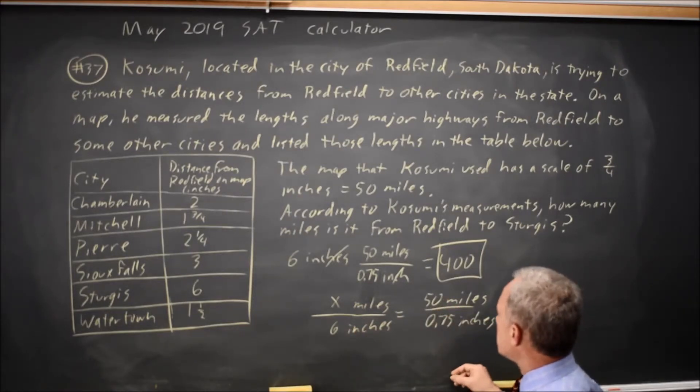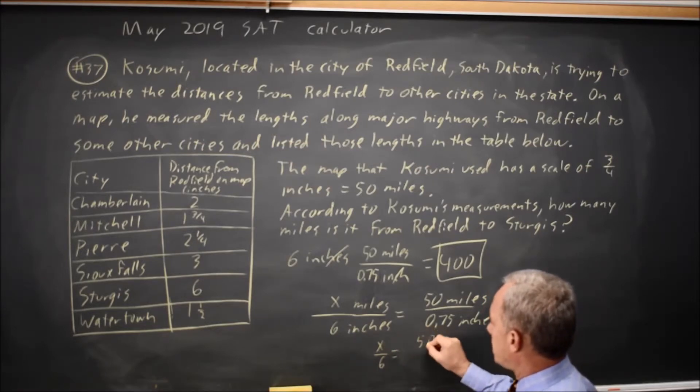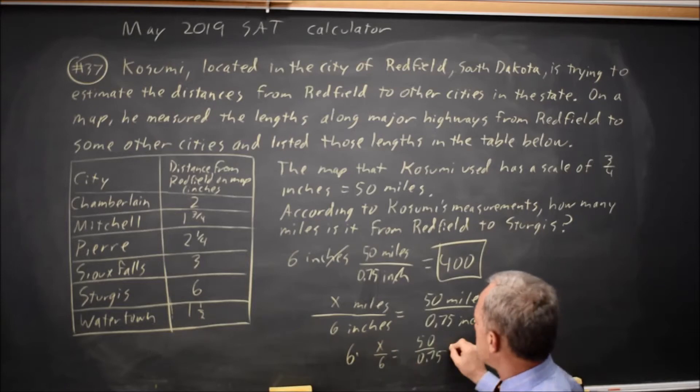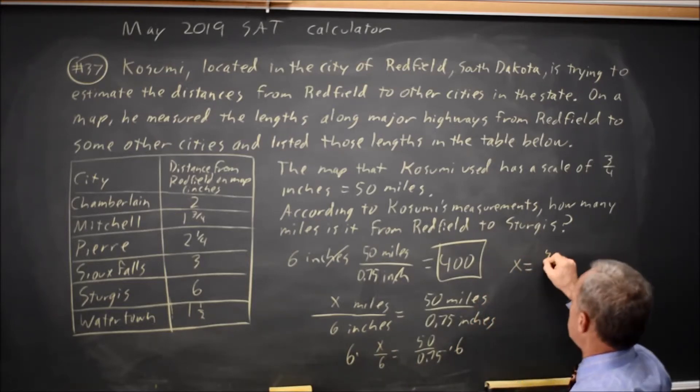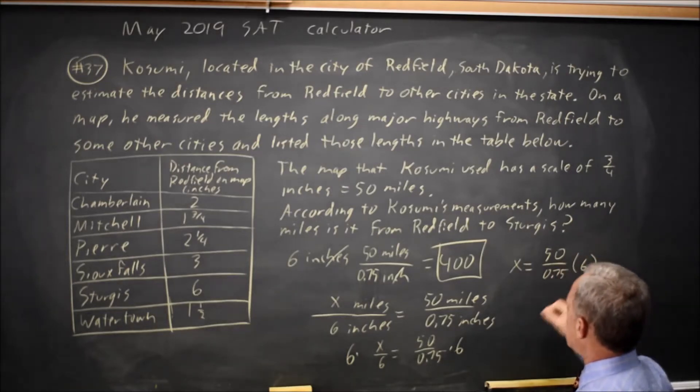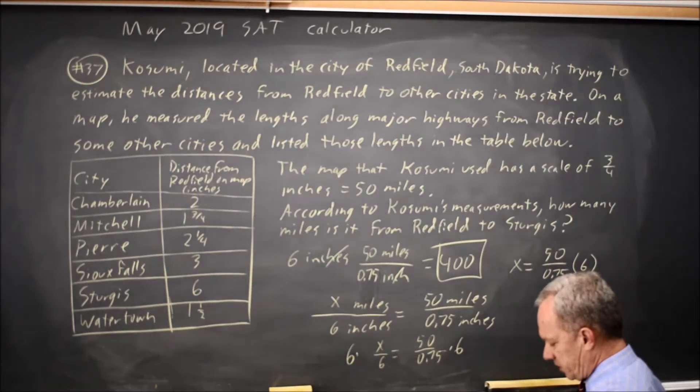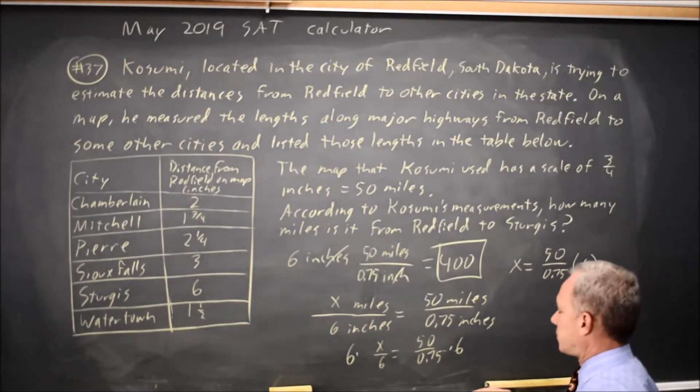So I have x over 6 equals 50 over 0.75. Multiply both sides by 6, and I get x equals 50 over 0.75 times 6. And on my calculator, 50 over 0.75 times 6 is 400 miles again.